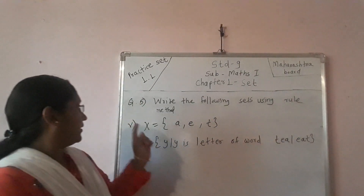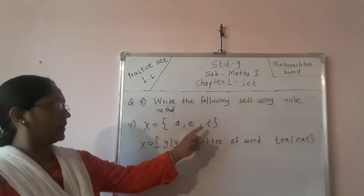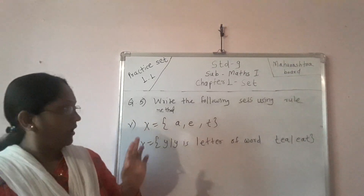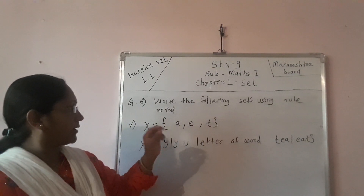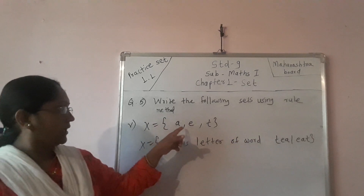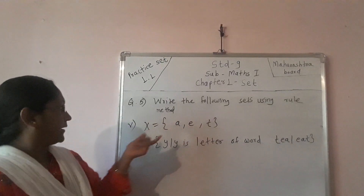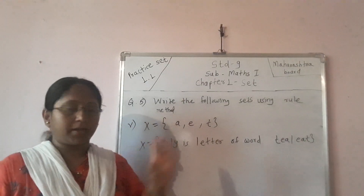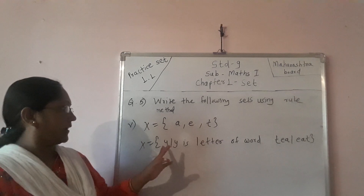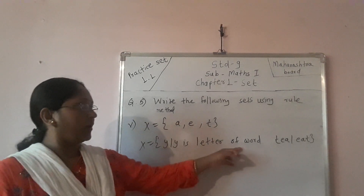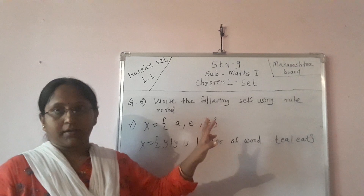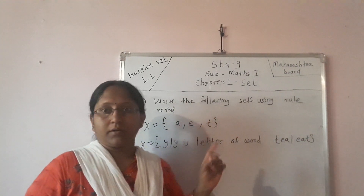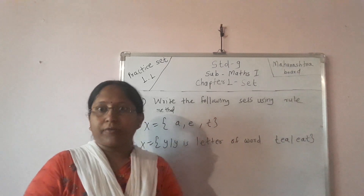Last question: X = {A, E, I}. These are elements of some particular word. From this we get two possible words — 'tie' or 'it'. So we declare: X = {y | y is a letter of the word 'tie' or 'it'}. Both are correct — whichever word you want, take that one. Thank you, friends.